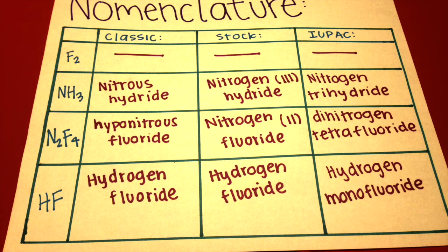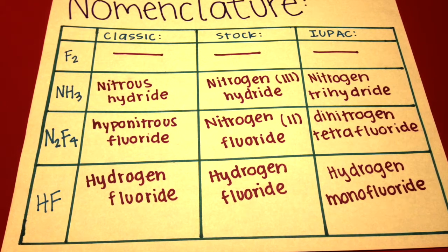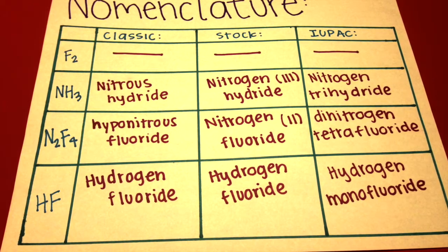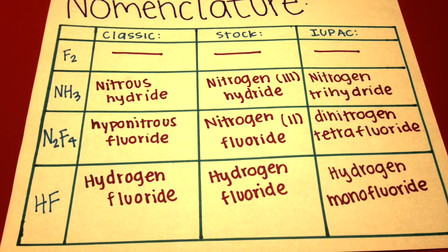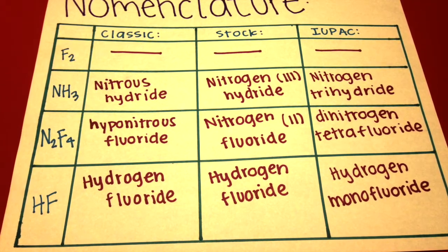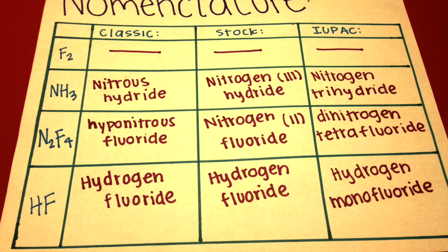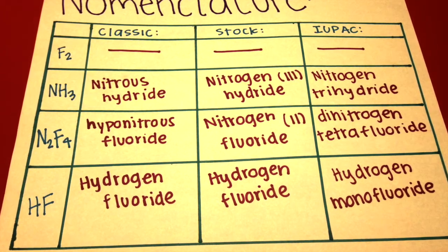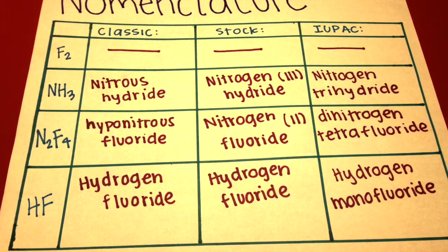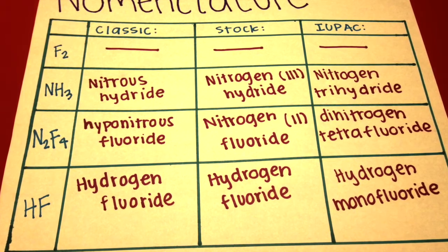This is the nomenclature for the atoms and molecules of the first problem. Fluoride is an atom and therefore cannot be classified in the following systems. NH₃, also known as ammonia, is a molecule. In the classic system, it is called nitrose hydride. In the stock system, it is called nitrogen-3 hydride. And in the IUPAC system, it is called nitrogen trihydride.